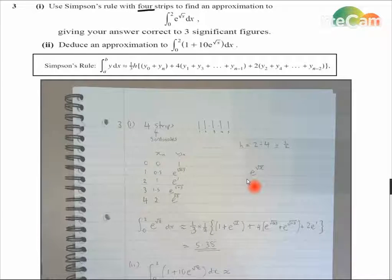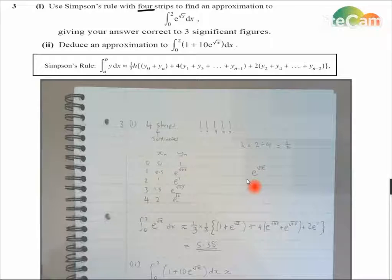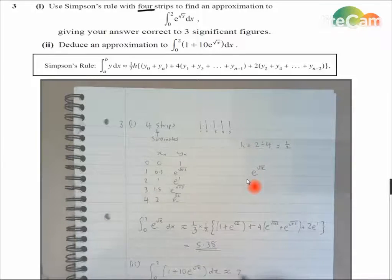So just as a side calculation here, if I integrate between 0 and 2, 1 dx, well that would become x between 2 and 0, which would give me 2 minus 0, which is 2. So from integrating that between 2 and 0, I get 2 plus 10 lots of integrating that, I get that, 5.38.